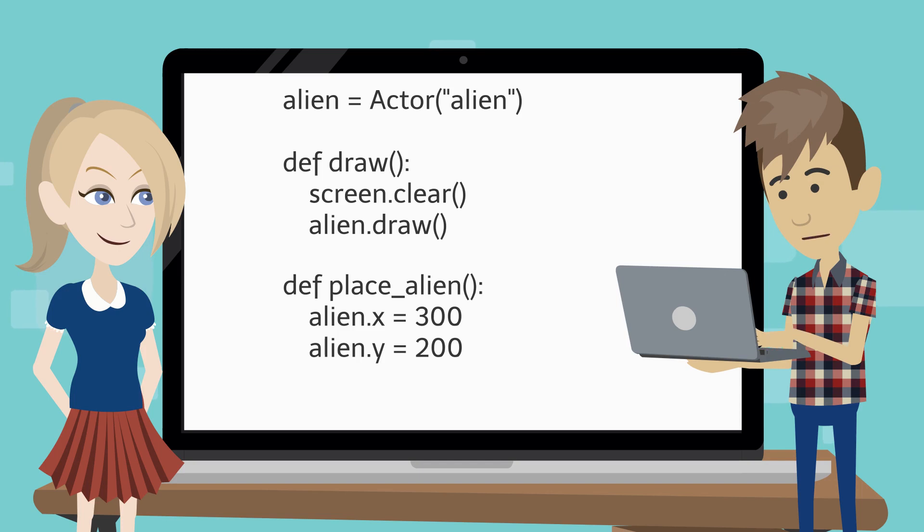After we've written the code to place the alien on the screen, we need to tell Python to run it. Add this extra line of code to run the function called place alien. This function places the alien at coordinates 300, 200.